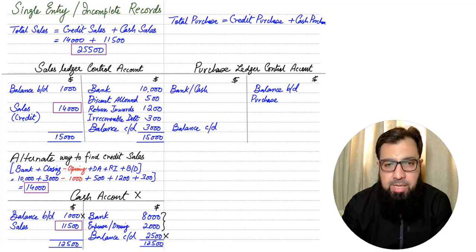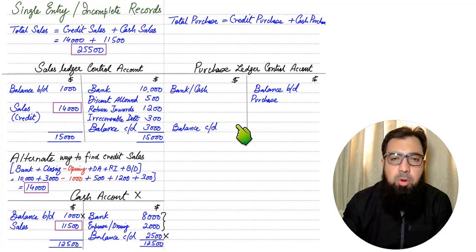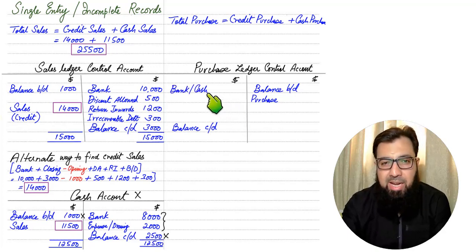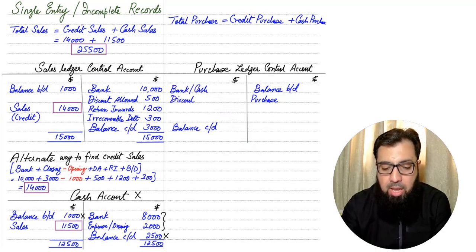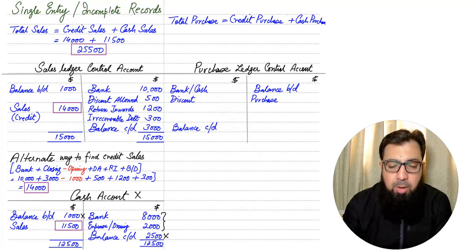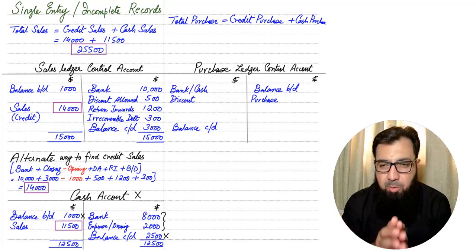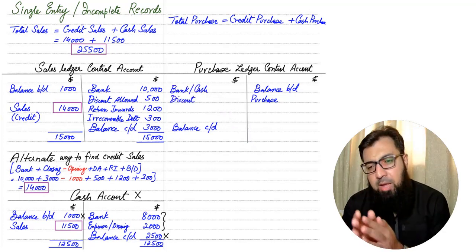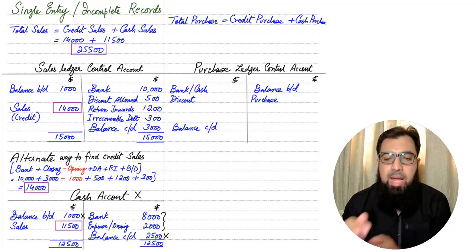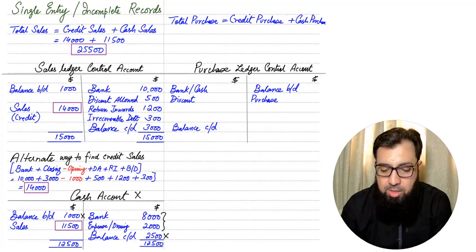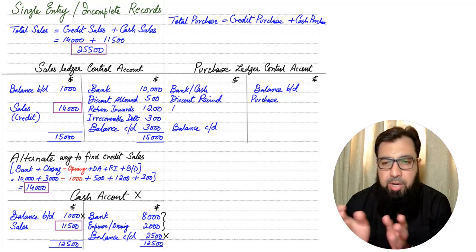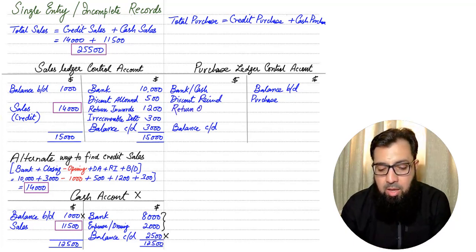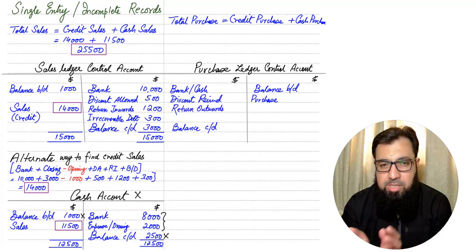Whenever we pay our suppliers for goods purchased on credit, the liability decreases. The entry is: Cash or Bank is credited and the liability account is debited. Whenever we pay our suppliers earlier than promised, the supplier gives us a discount — a cash discount known as Discount Received — and this reduces our liability.